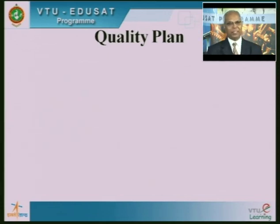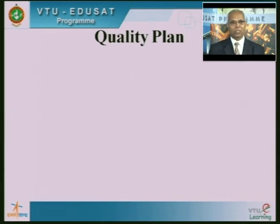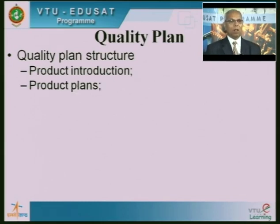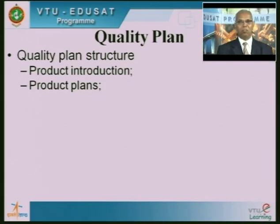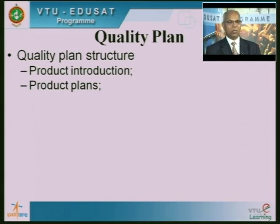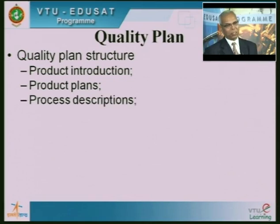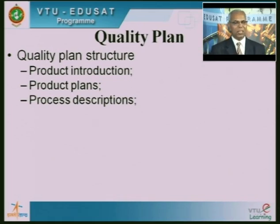A quality plan is the document generated at the end of the quality planning process. It should contain: an introduction to the product — what we are developing and its salient features; a product plan — how we are going to develop it, the schedule, various activities, and their sequence and timing; and a process description — what is supposed to be done at each process, the expected input, and the expected output. All these are briefly defined in the quality plan structure.